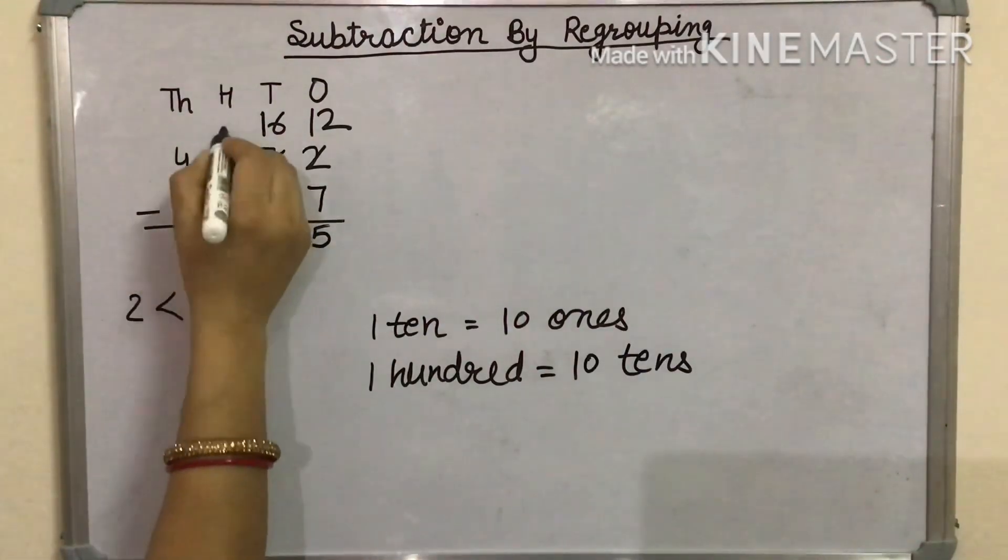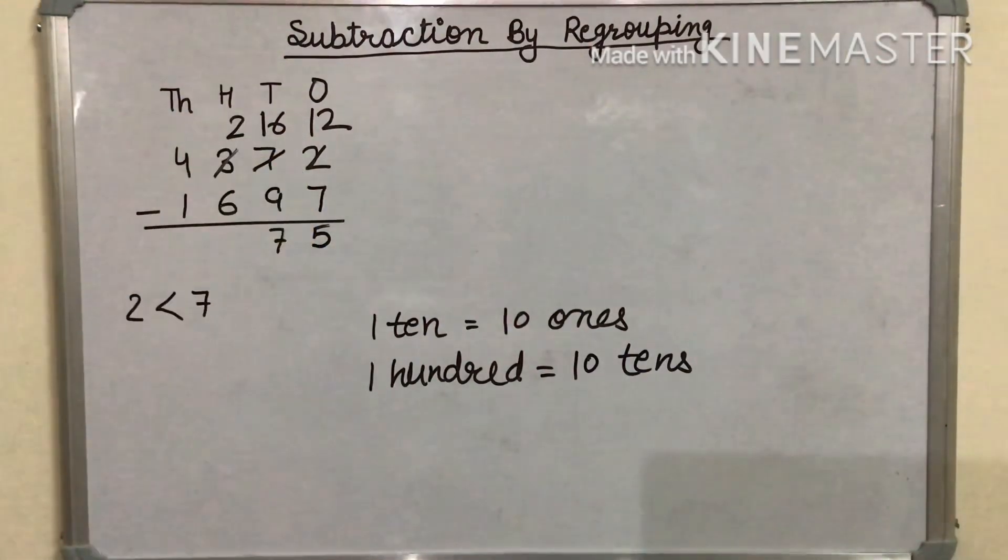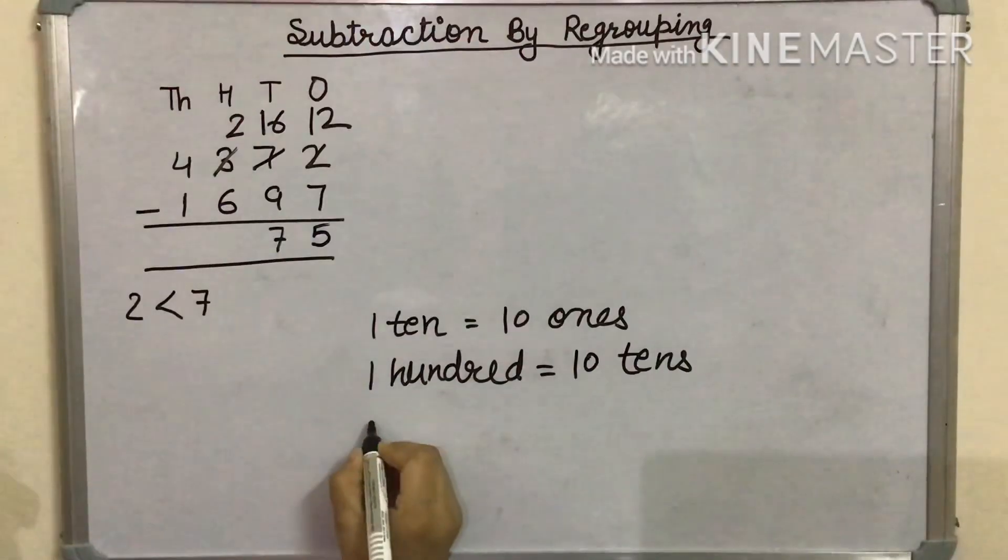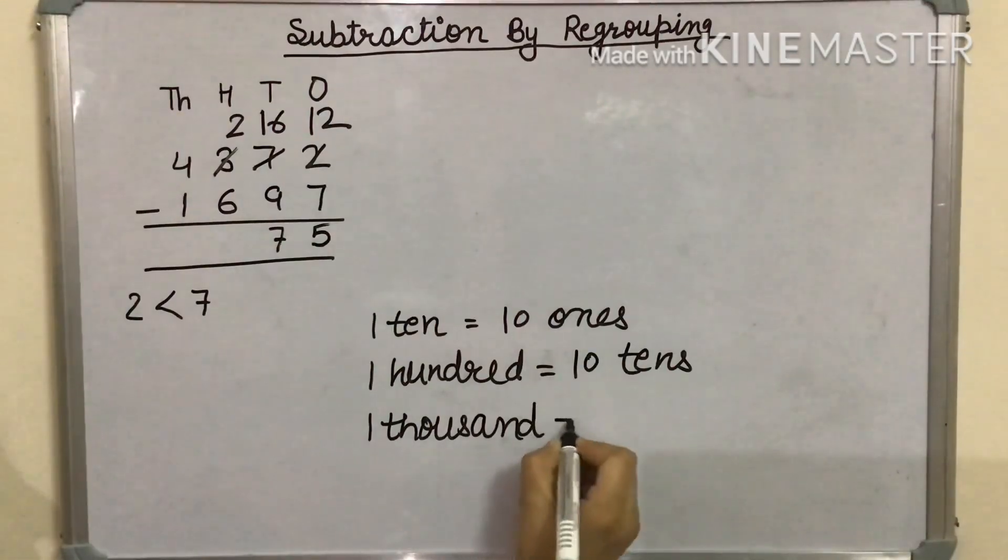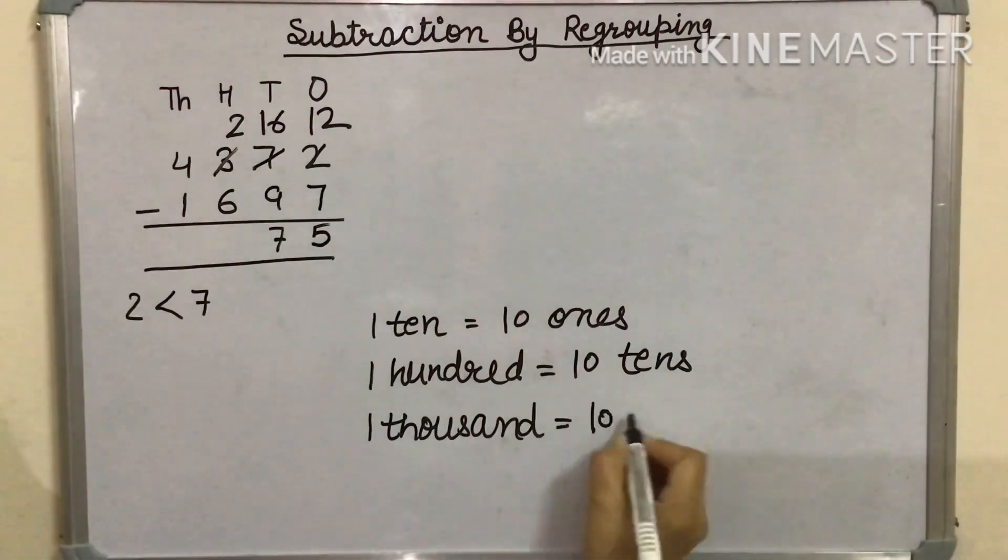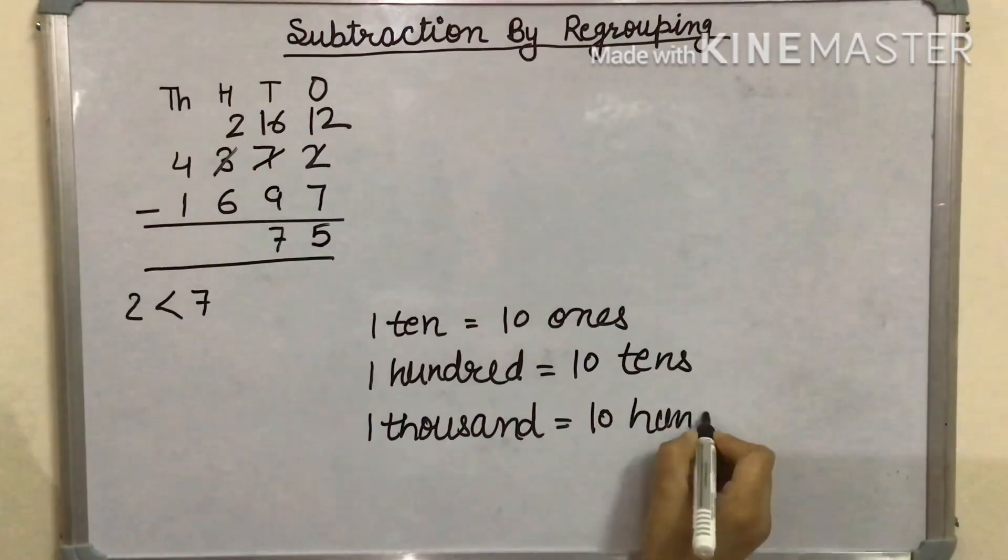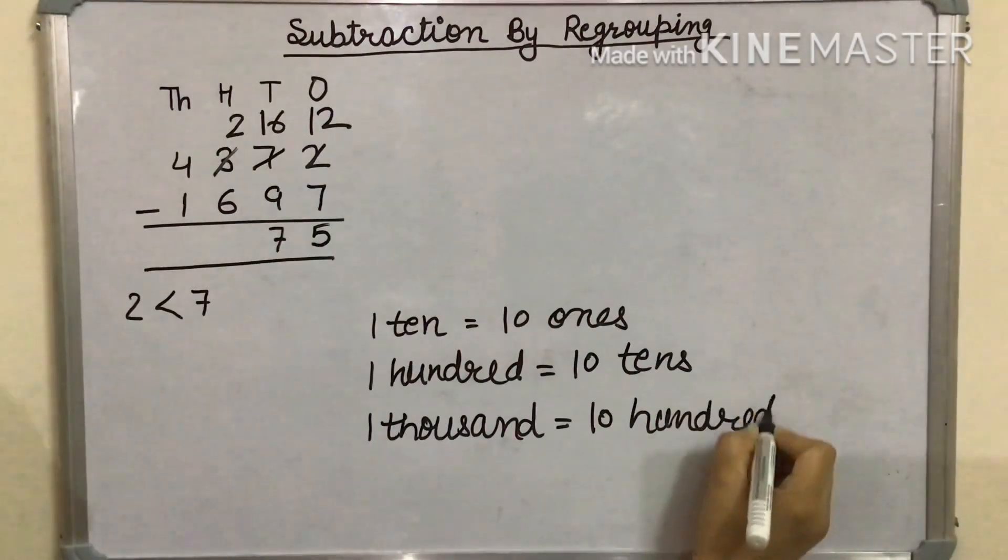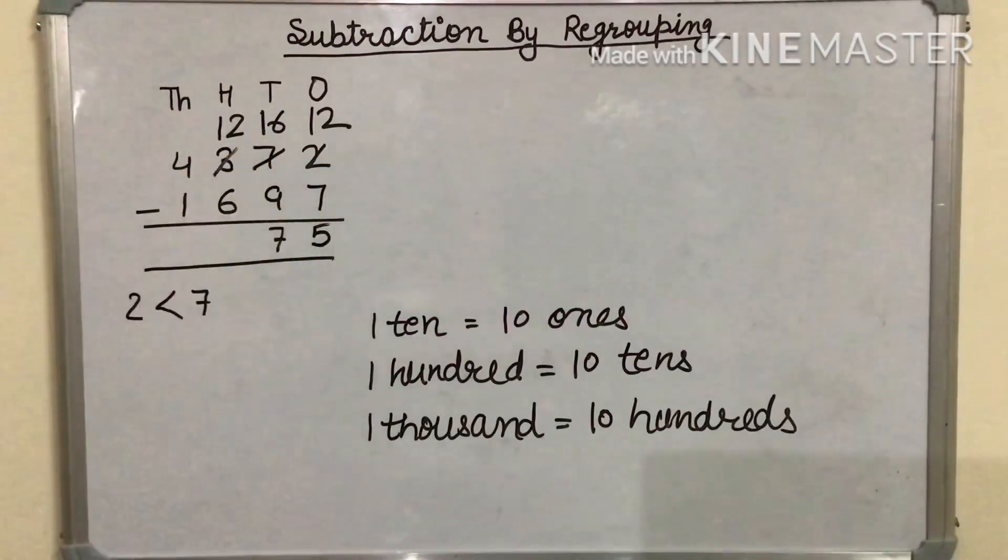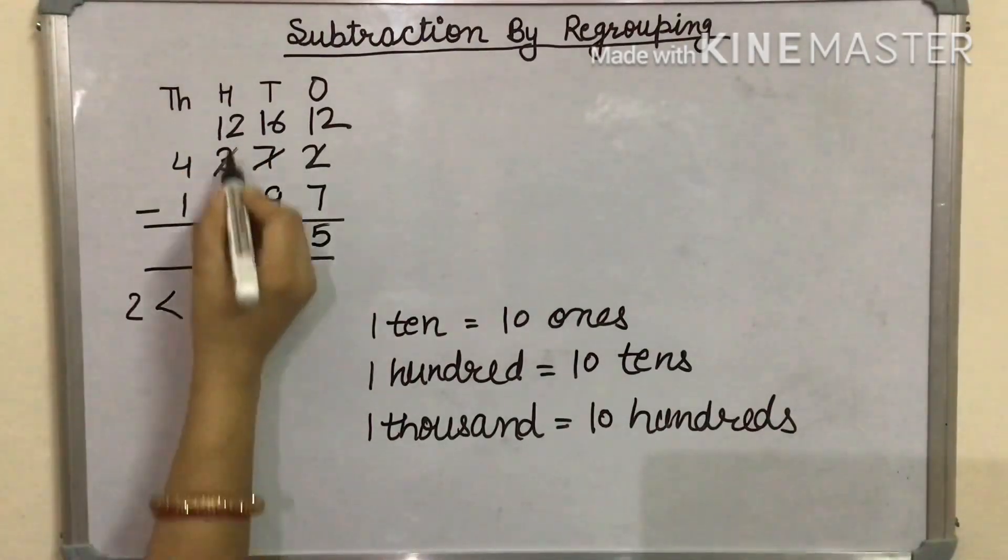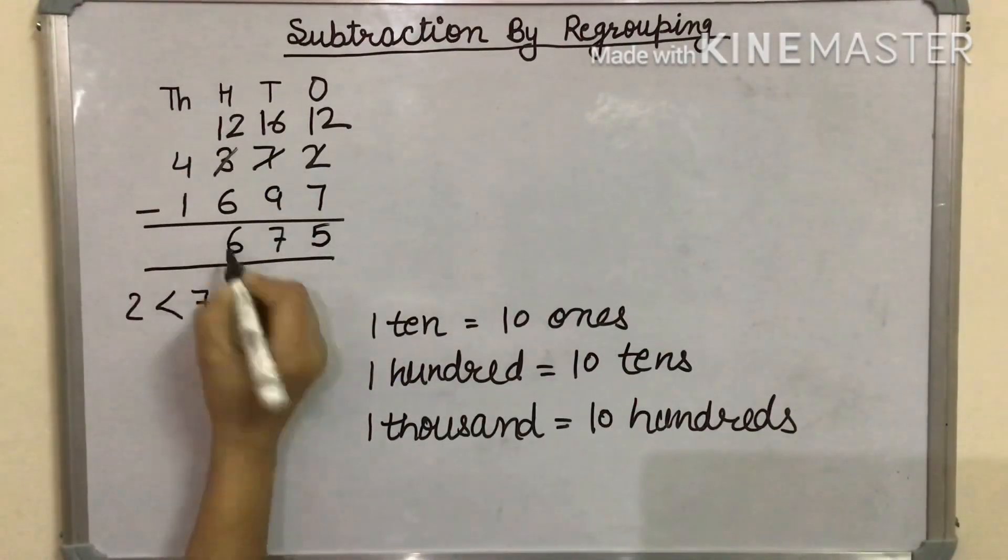The 100s number will be 2. Now, we will borrow 1,000. 1,000 is equal to 10 hundreds. Now, the 100s digit will be 12. We will subtract 6 from 12 and the answer will be 6.